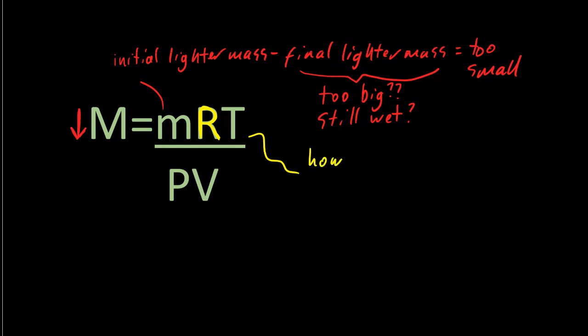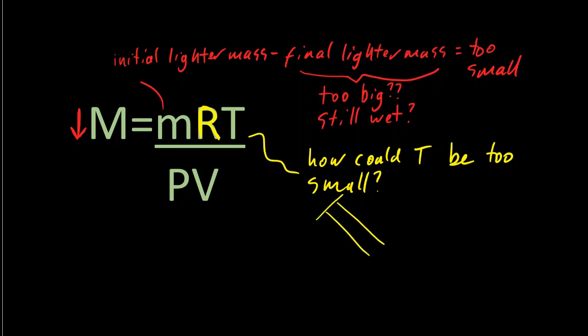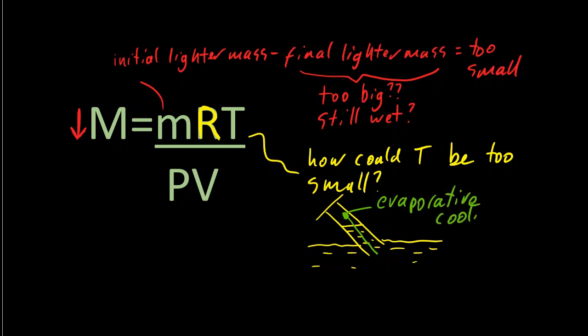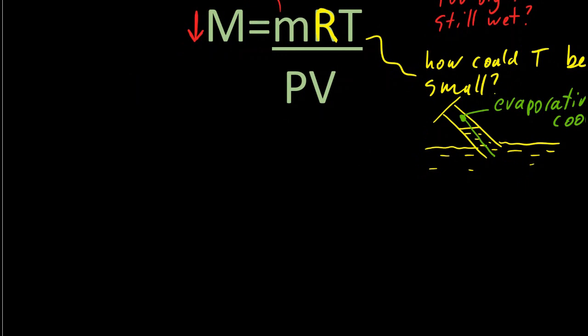Maybe the lighter was still wet. The gas constant is just a constant - it is what it is, not too big or too small. For temperature, what could account for it being a bit too small? When I put the thermometer into the gas, the end of the thermometer ended up being a bit wet, and maybe evaporative cooling reduced the temperature. I could have avoided that by waiting longer to see if the temperature was stable.